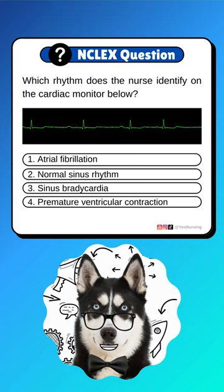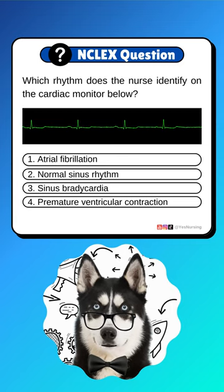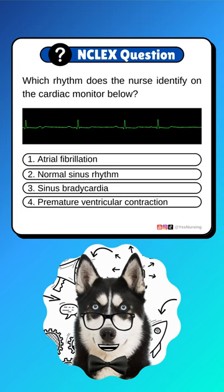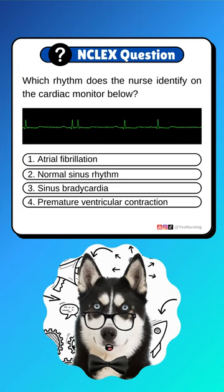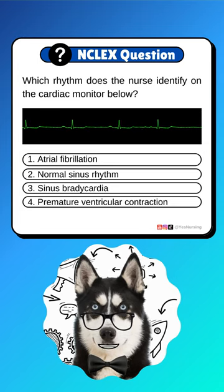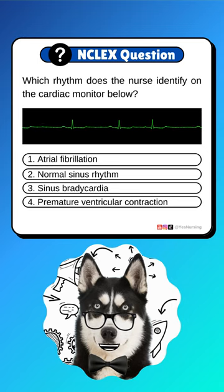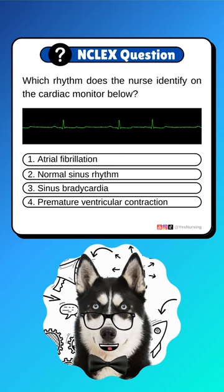Which rhythm does the nurse identify on the cardiac monitor below? 1. Atrial fibrillation. 2. Normal sinus rhythm. 3. Sinus bradycardia. Or 4. Premature ventricular contraction.